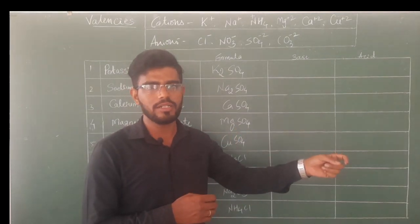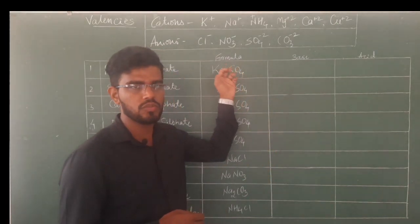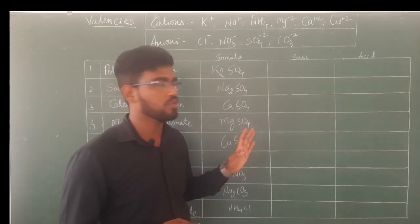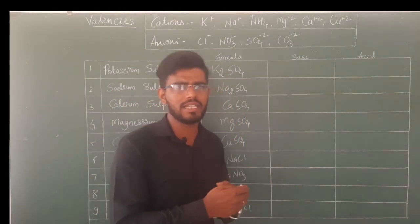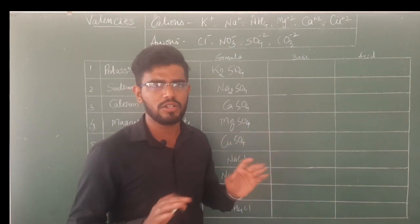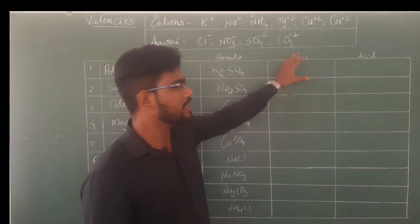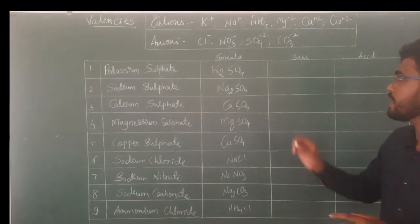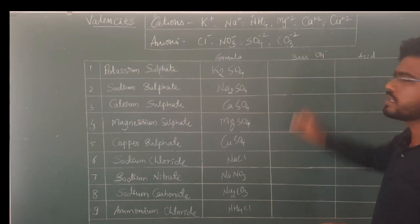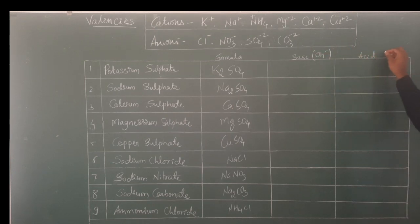We have understood that whenever any acid and base react, they form a salt and water. So what acid and base might react to form K₂SO₄, potassium sulfate? I will give a trick to understand this in a simple manner. We know that all bases contain OH⁻ as a common entity, and all acids contain H⁺ as a common entity.